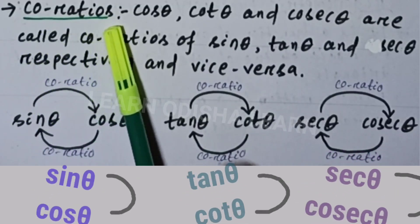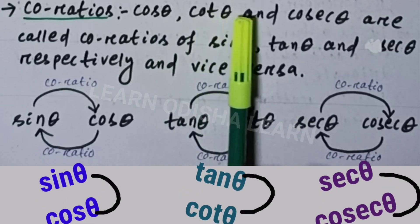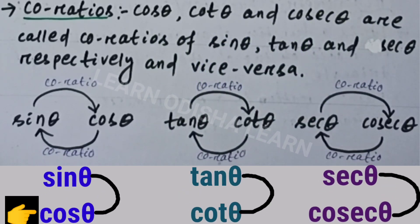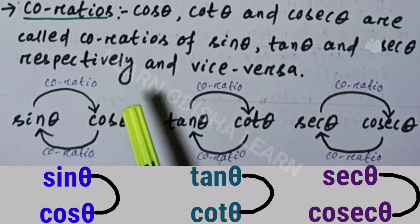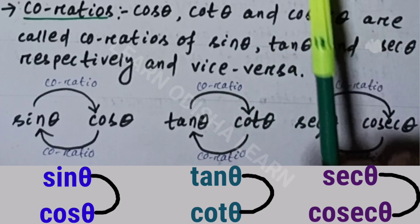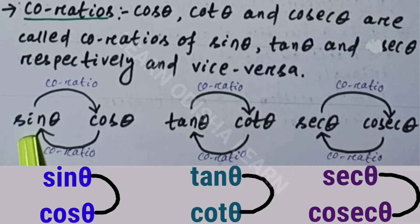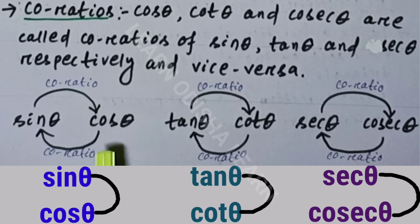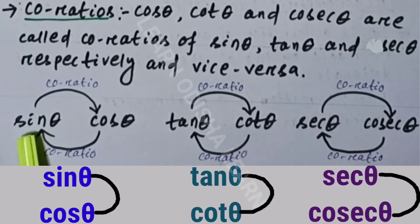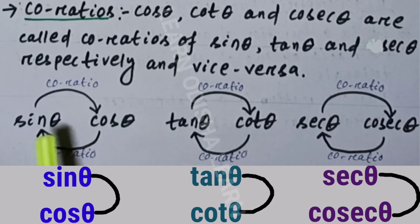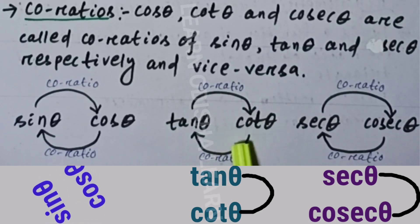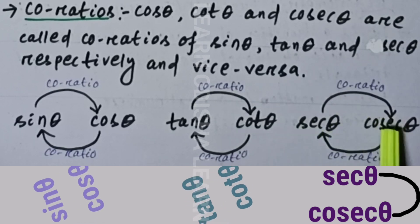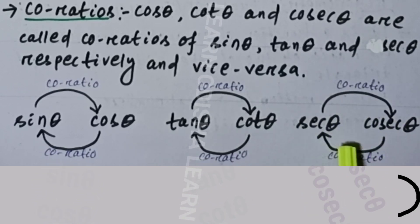Complementary ratios: cos theta, cot theta, and cosec theta are called complementary ratios of sin theta, tan theta, and sec theta. Sin theta and cos theta are complementary ratios of each other. Similarly, tan theta and cot theta are complementary ratios of each other, and sec theta and cosec theta are complementary ratios of each other.